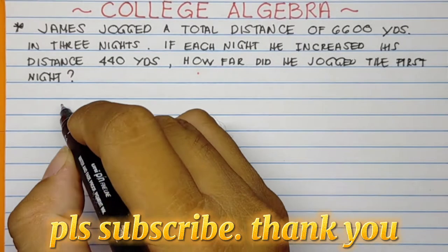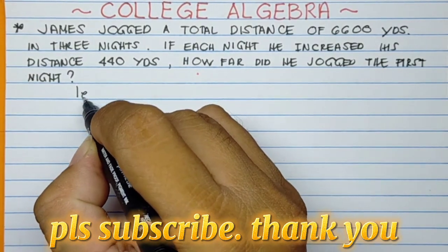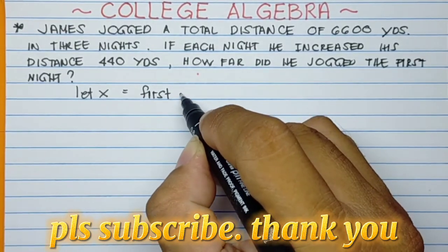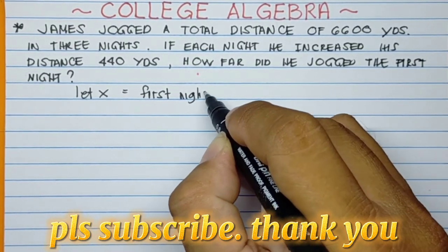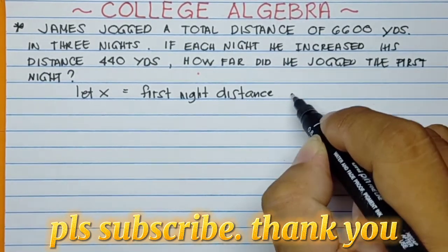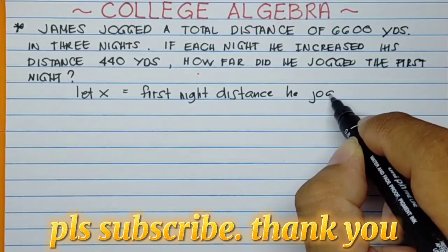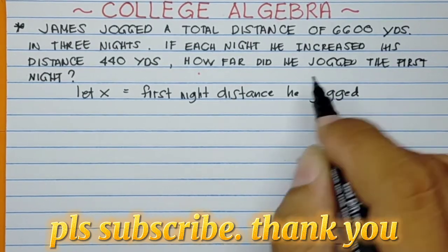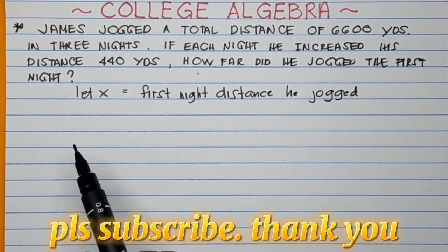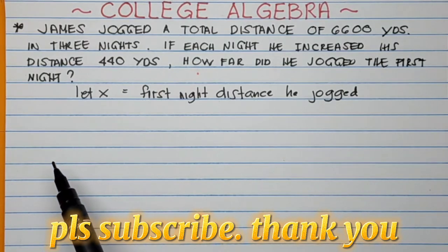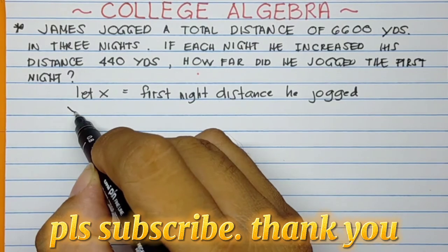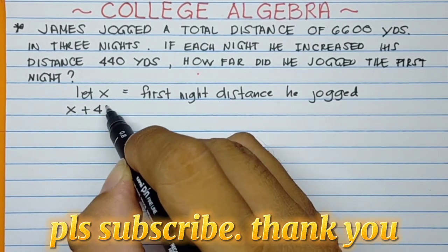So first, let X equal the first night distance he jogged. It says here, each night he increased his distance by 440 yards. So it means on the second night, X plus 440. So this is the second night distance.